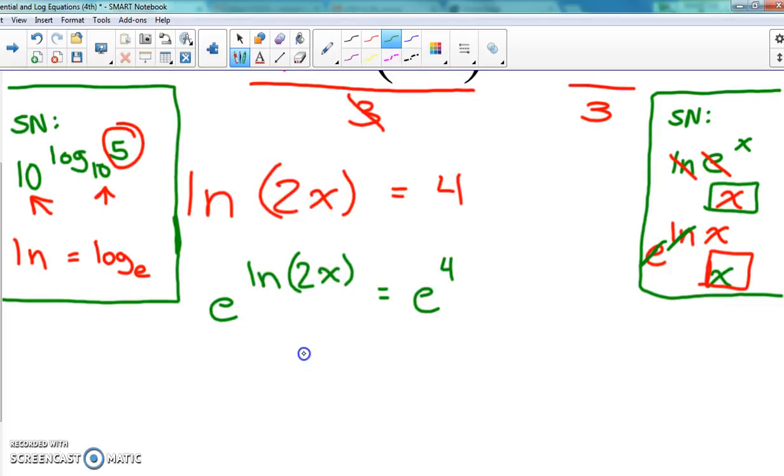Now we can use what we talked about. The natural log and e cancel each other out, so they're gone. That means the answer is just our variable - whatever was behind the natural log. So 2x equals e to the fourth power, and the last thing is just solving for x.